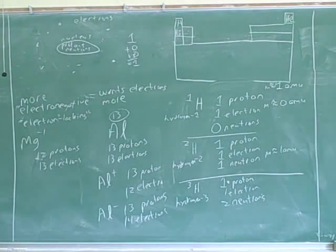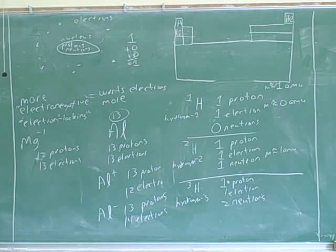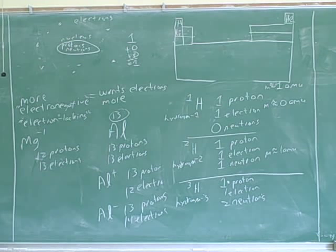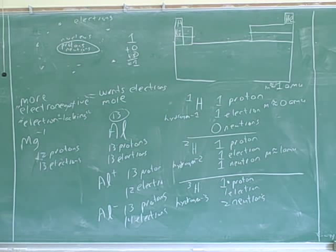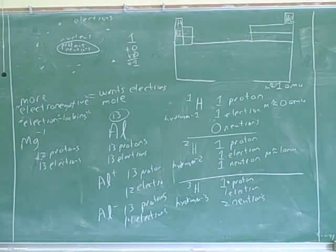If you look in the periodic table, besides the atomic numbers which they have up above, they also have numbers below each element. The numbers below are the masses. For example, for hydrogen you can see the mass is 1.008, then helium is 4.003, then lithium is 6.941, and 9.012. So those are the masses.